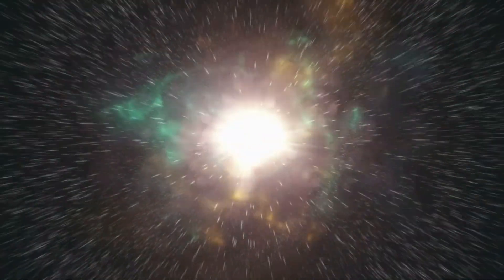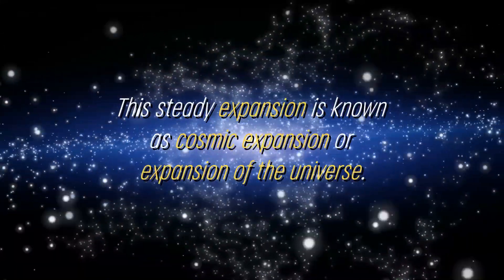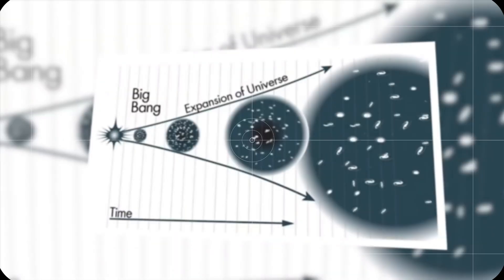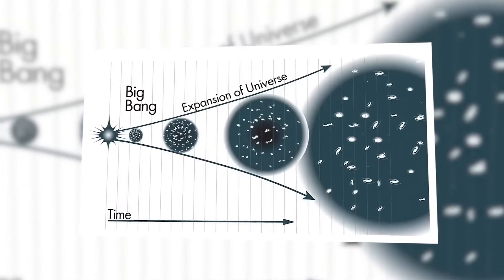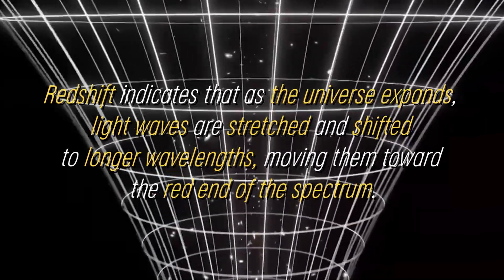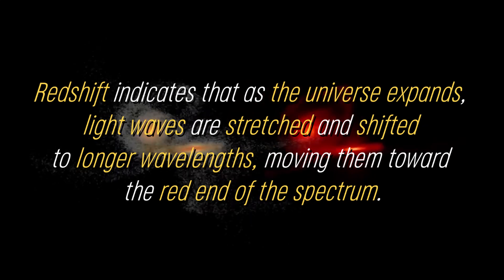As the universe continued to expand, the rate of expansion gradually slowed. It is important to note that although there was rapid cosmic inflation in the initial period, the universe continued to expand at a measurable rate. This steady expansion is known as cosmic expansion, or expansion of the universe. Scientists have observed the effects of this expansion through various observations, such as the redshift of light from distant galaxies. Redshift indicates that as the universe expands, light waves are stretched and shifted to longer wavelengths, moving them toward the red end of the spectrum.